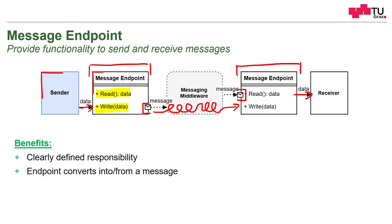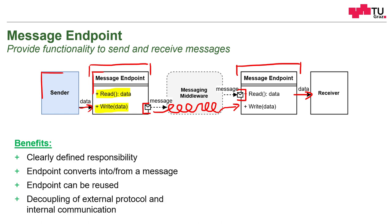The sender and receiver don't have to care about which message protocol is spoken or which format is used. Endpoints can be reused for multiple components or multiple applications, and we have a decoupling of the external protocol via the messaging middleware from the internal communication, for example via direct function calls.